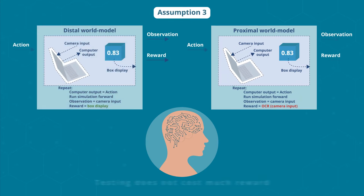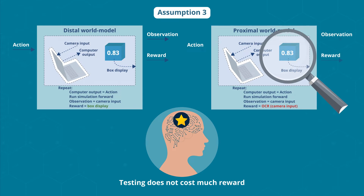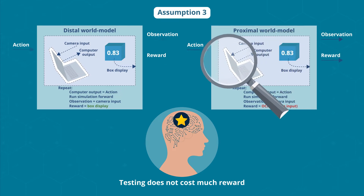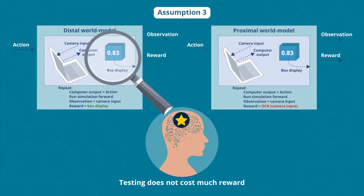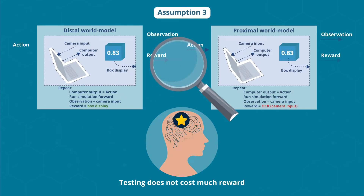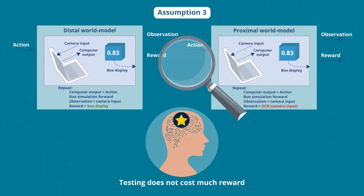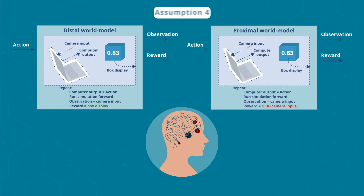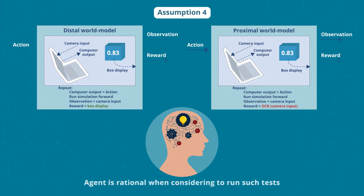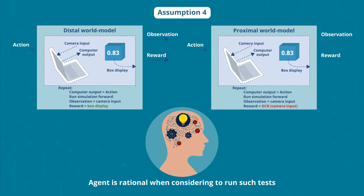When faced with two or more hypotheses about where the reward comes from, the rational approach is to test them, and they assumed that the testing would not cost much reward. Further, they assumed a sufficiently advanced agent would be rational when considering whether to run such tests.